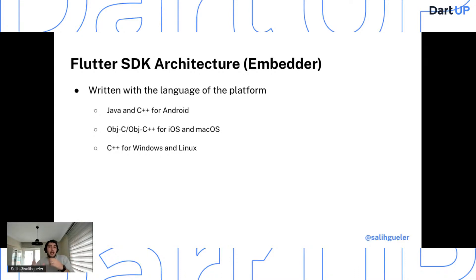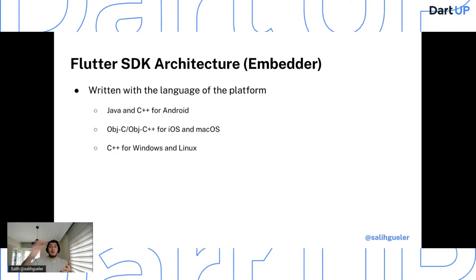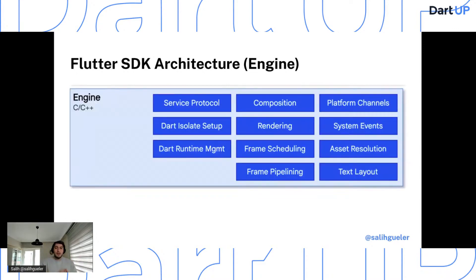Using the embedder, Flutter code can be integrated into an existing application as a module. For example on Android, you can take Flutter, add it to your application, and navigate to the Flutter activity from your native activity. You just need to keep the engine running to avoid glitches. Your Flutter app can live inside your native app on any platform.